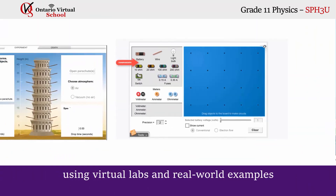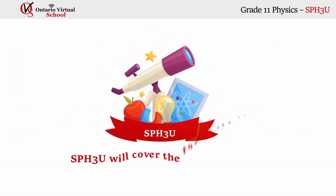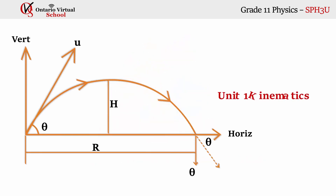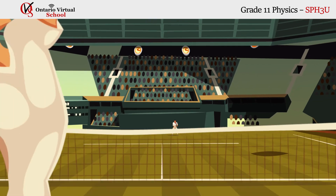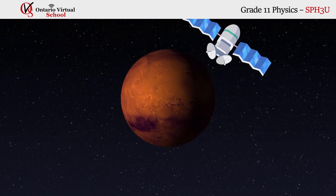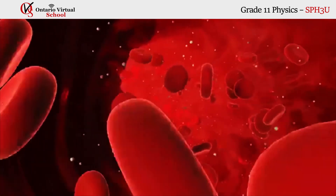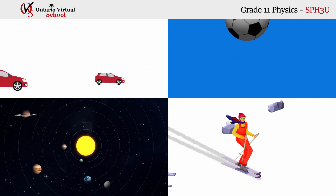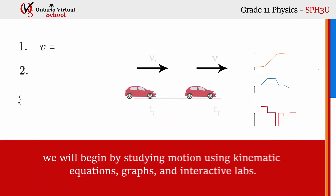Using virtual labs and real-world examples, SPH3U will cover the following units. Unit one: kinematics. Motion is all around us, from a tennis match to a satellite in orbit around Mars. Everything involves motion — even when you're asleep, your heart continues moving blood throughout your entire body.